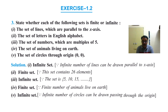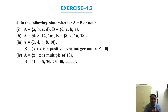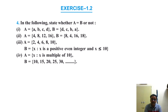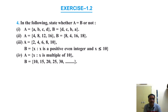Question 4: State whether A equals B or not. First: A = {A, B, C, D} and B = {D, C, B, A}. Elements may be listed in any order; both sets have the same 4 elements, so A = B. Second: A = {4, 8, 12, 16} and B = {8, 4, 16, 18}. Here 12 is in A but not in B, and 18 is in B but not in A. Although both sets have 4 elements (they are equivalent), the elements differ, so A ≠ B.